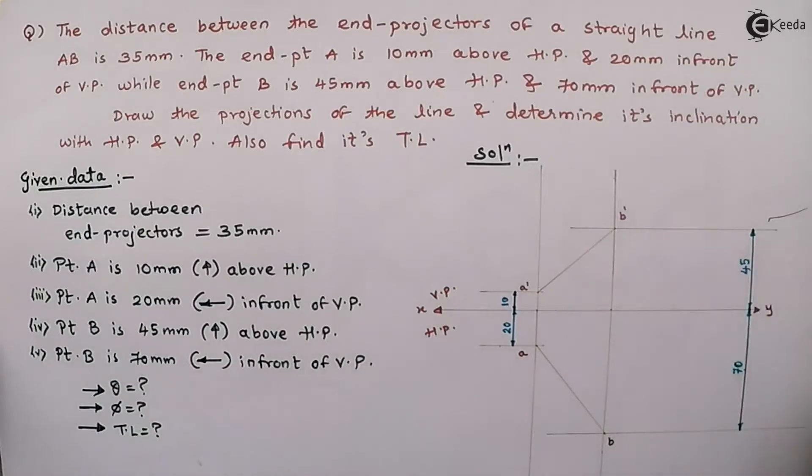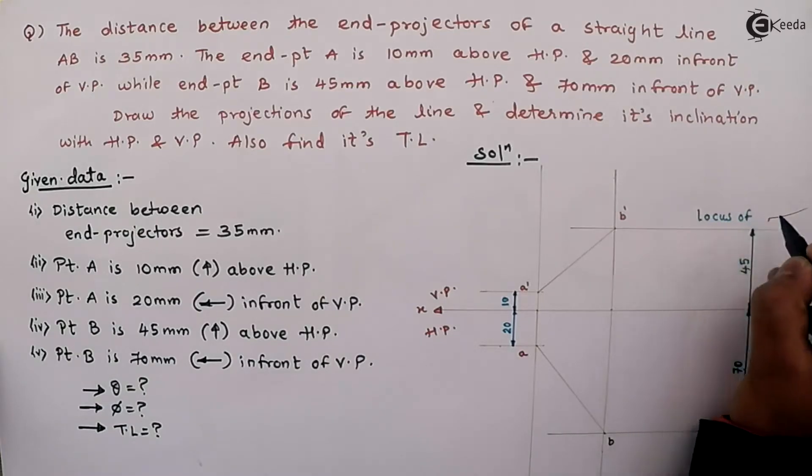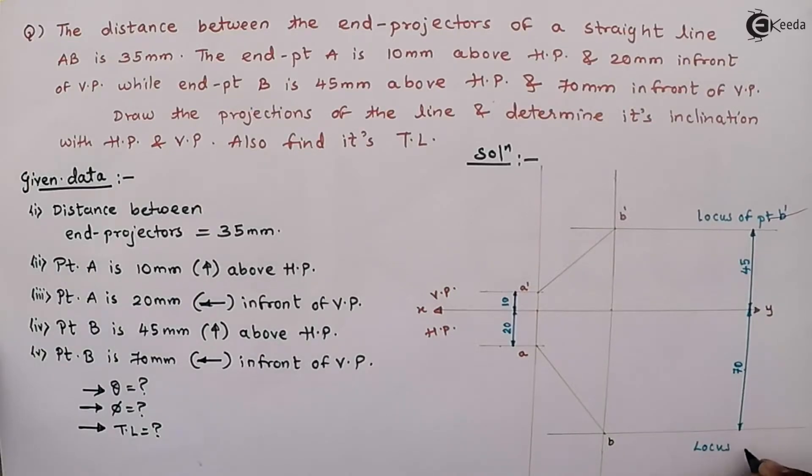Next, here the line which I am getting, this is called as locus of point B in the top view, locus of point B.